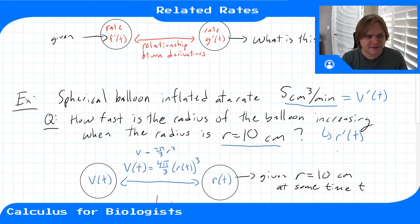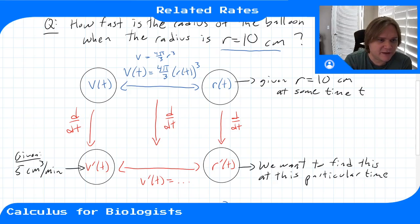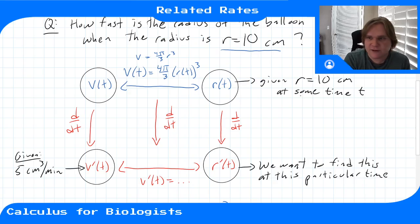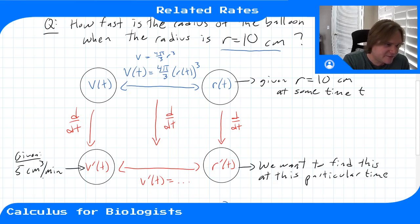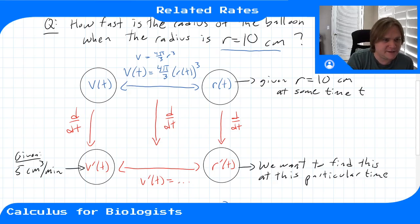We mapped onto the framework: two variables V and r, both functions of time. We don't have an explicit formula for how they depend on time, but we do have one for how they depend on each other — the volume of a sphere equation. We were given the value of r at some moment in time and the value of V prime at that moment, and we're looking for r prime. To get that, we took the derivative of the relationship between the two variables with respect to time.